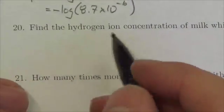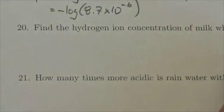Hi everyone. This question says find the hydrogen ion concentration of milk which has a pH of 6.5.